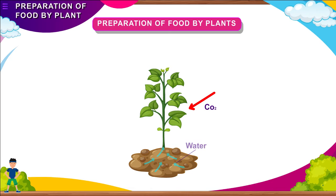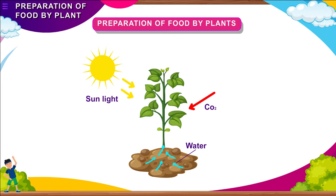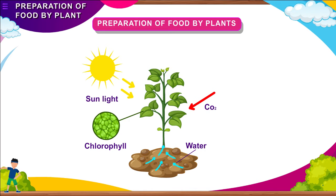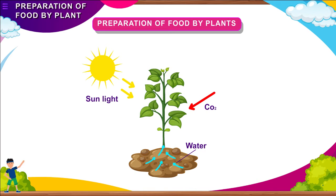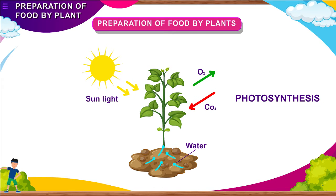Leaves need carbon dioxide, water, and sunlight for preparing food for the plant. The leaves take in carbon dioxide from the atmosphere. Water sucked by the roots from the soil is carried to the leaves by the stem. Chlorophyll present in the leaves traps the energy of sunlight. This energy turns carbon dioxide and water into food. This process of preparing food by the plant is called photosynthesis. The word 'photo' means light, and 'synthesis' means putting together — so photosynthesis means putting together by light.